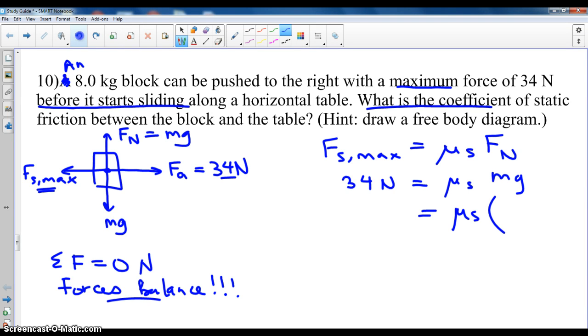And F_N is equal to MG. M is eight. Eight kilogram block. G is 9.8. That's 34. This would have units of kilograms. That's meters per second squared. Together they make a newton, which cancels that newton. So mu, you get 34 over 8 times 9.8. Calculator error. 0.43 is mu.